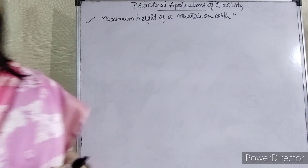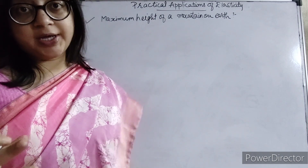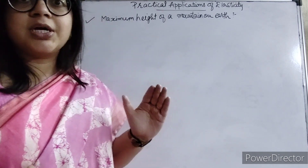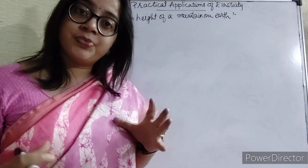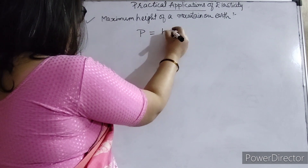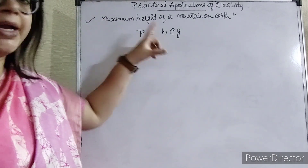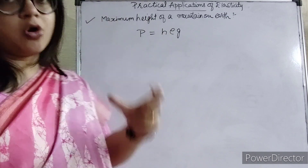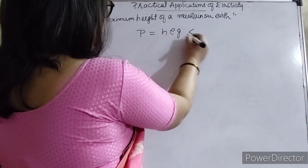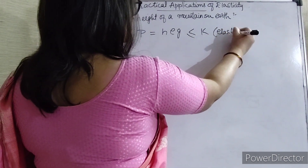The reason is because we know that the pressure of a material or a substance is the height of a column, like a solid rock. So the pressure of the rock that we apply to the earth's base depends on its height. The pressure of the rock equals the height of the column multiplied by the acceleration due to gravity of the earth, and this pressure is less than or equal to k, where k is the elastic limit of earth.